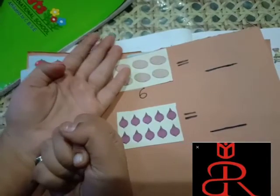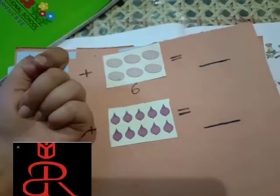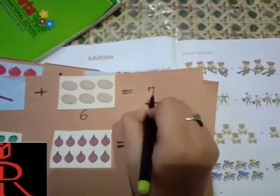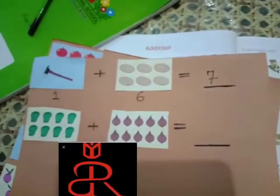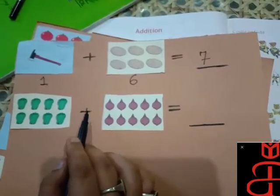Two, three, four, five, six, seven. It means one plus seven is, one plus six is seven. Answer is seven. Now, this you will do by your own.